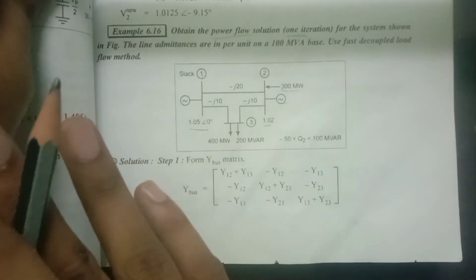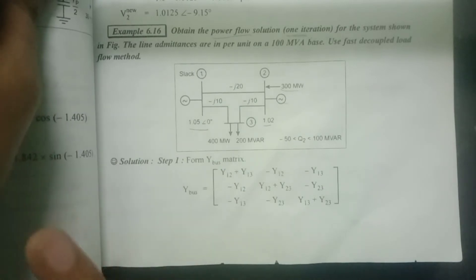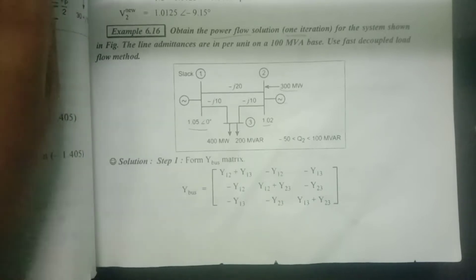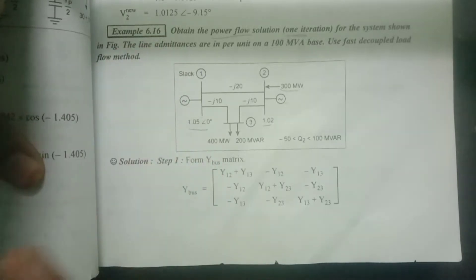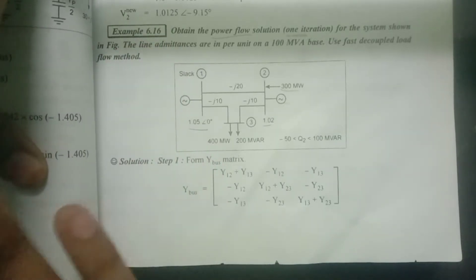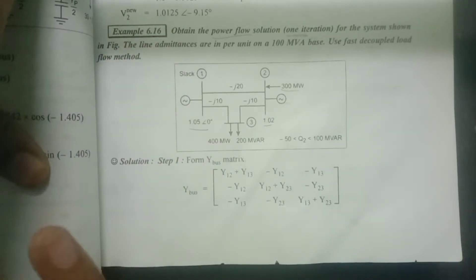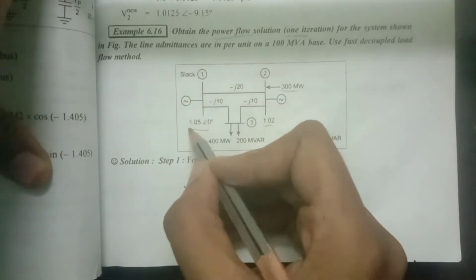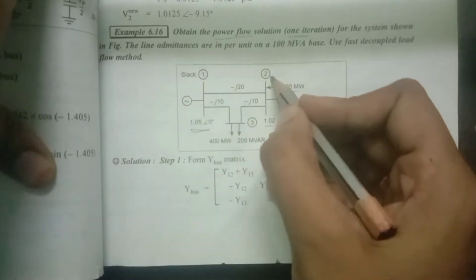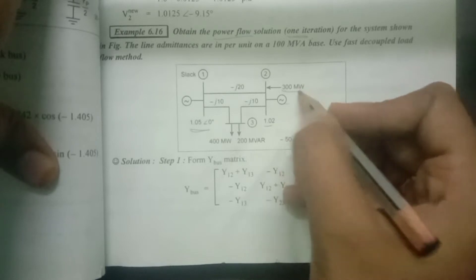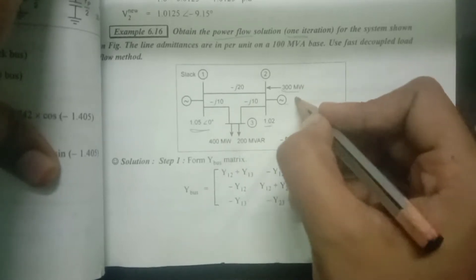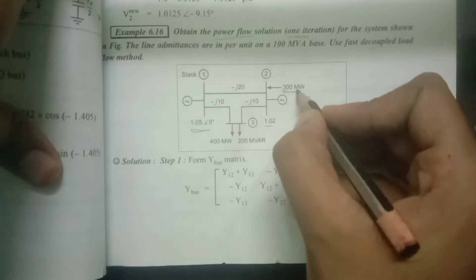The Fast Decoupled Method flow chart — we will do one iteration. Bus 1 is the slack bus with specified voltage. Bus 2 is the generator bus (PV bus) with real power of 300 MW and specified voltage.